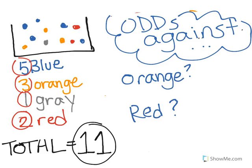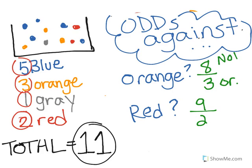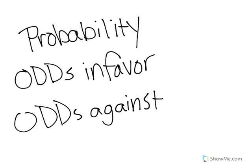Now try to find the odds against picking a red and the odds against picking an orange. The answers: odds against orange are 8 to 3, because there are 3 orange which means 8 are not orange. For red, there are 2 red and 9 not red — when it's odds against, you put the 'not' number on top, so it's 9 to 2.